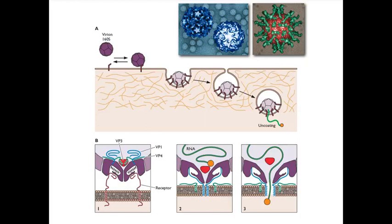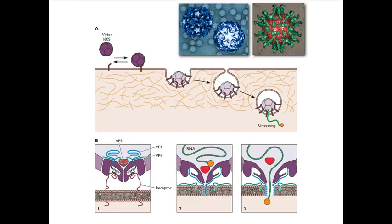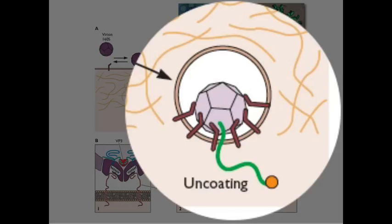So remember, if the receptor isn't on a cell, this will not happen. So this is the control that the RNA will only come out in the right cell type. So what we think happens is the virus binds its receptor and is quickly taken up into a vesicle, and very close to the cell surface, the RNA is then ejected from the particle.